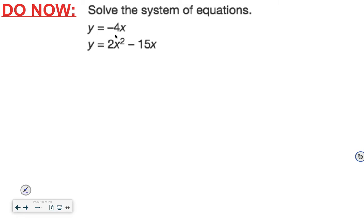Solve the system of equations: y is equal to negative 4x, and y is equal to 2x squared minus 15x. One equation is linear and the other is quadratic. Since both equations have y on the left side equal to expressions on the right side, we can set them equal to each other: negative 4x is equal to 2x squared minus 15x.